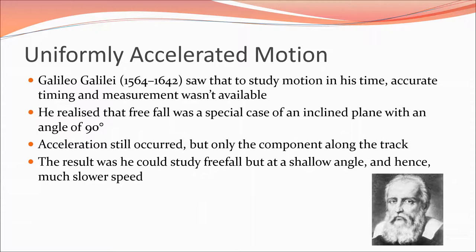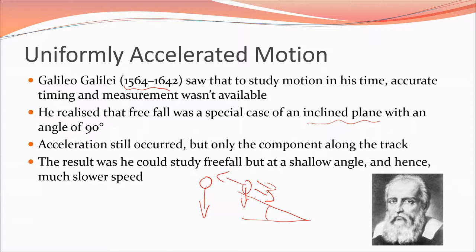Now why do we look at inclined planes? Let's look at Galileo Galilei. He lived quite some time ago and was trying to study motion and motion due to gravity, but he realized that the instruments he had at the time just were not good enough to accurately measure how an object was falling, particularly over the types of scenarios you'd have within a laboratory. What he realized was that free fall is a special case of an inclined plane — when an object is in free fall it's almost like it's rolling down an inclined plane, except the angle of that plane when in free fall is basically 90 degrees. An object rolling down a plane still has acceleration down the track. He started to resolve these forces and say: we've got gravity acting down, but the object is accelerating down the ramp and there are frictional forces involved in that, and he was the one that started to work that out.